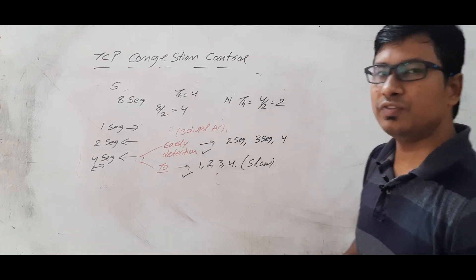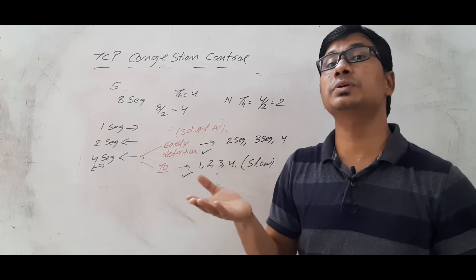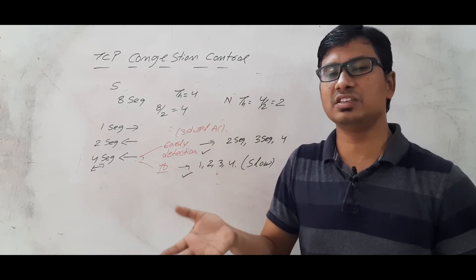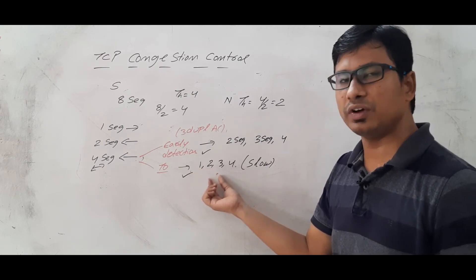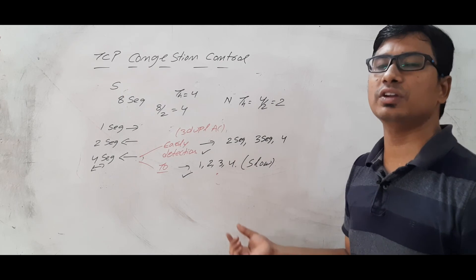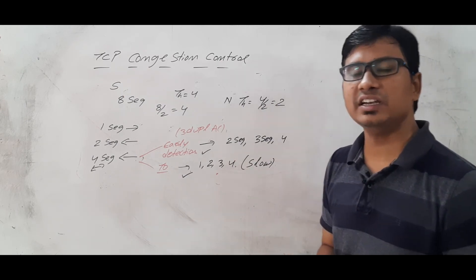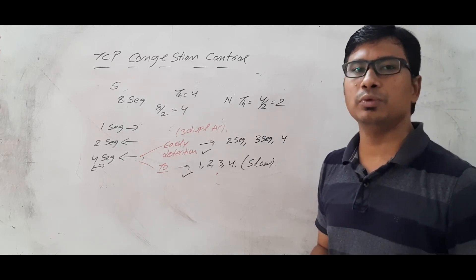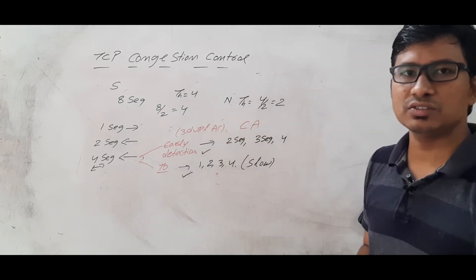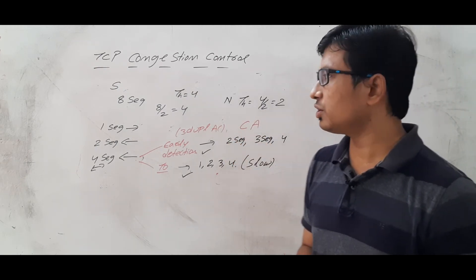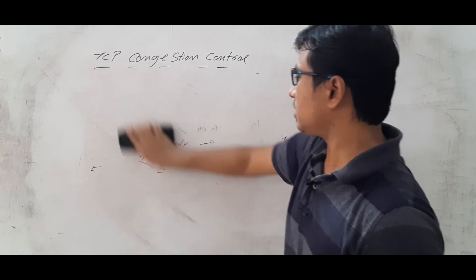This is a very important point: if congestion detection happens because of timeout, it means even acknowledgements are lost, indicating heavy network traffic — so you send 1 segment, go exponential, then linear. This is the slow start phase. If it is early detection, only a segment was lost but acknowledgements were still being received, so you go to the congestion avoidance phase.